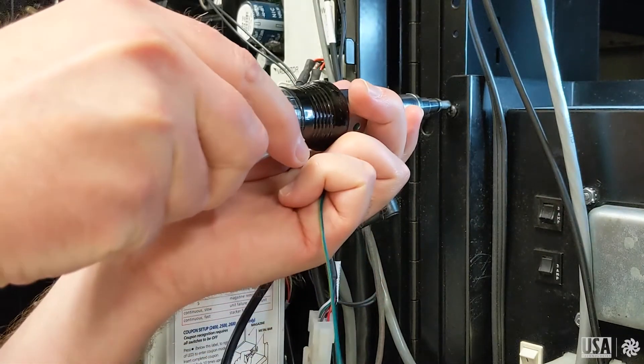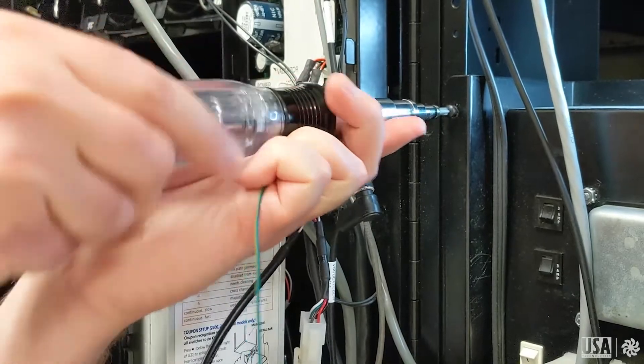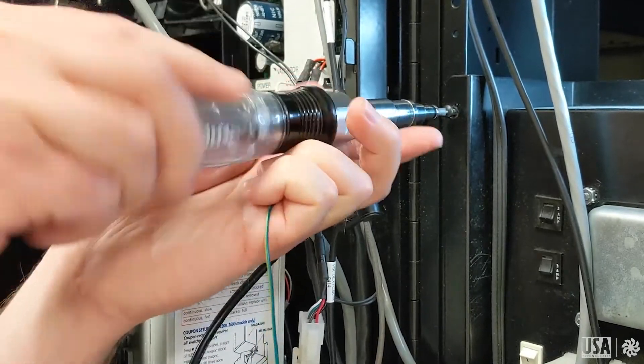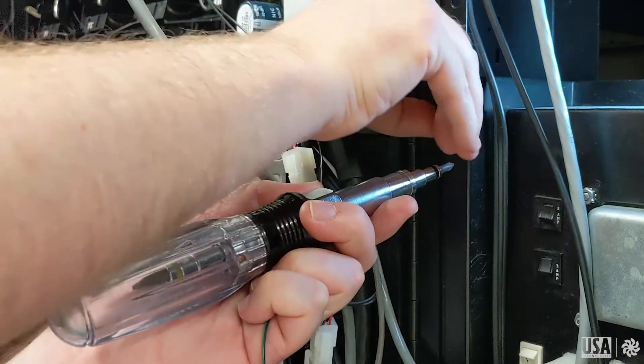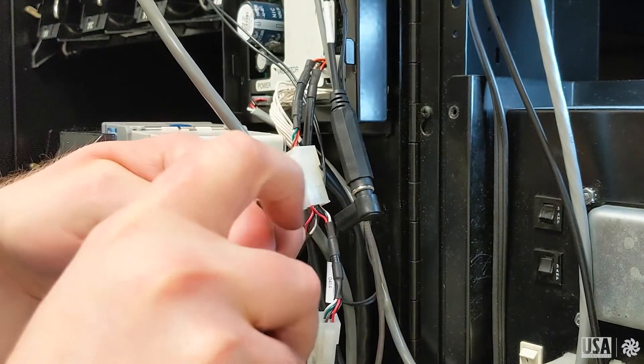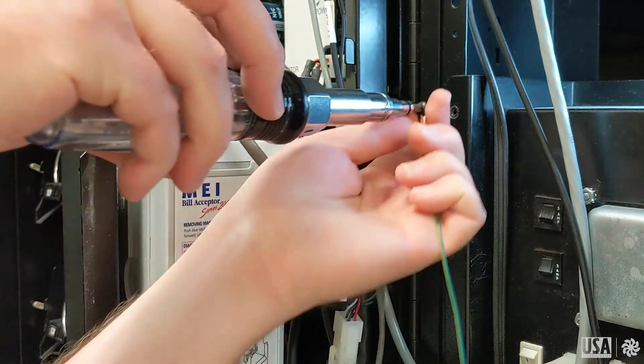Now we'll want to ground the unit using the ferrite loop and connecting it to a Phillips head screw close by to the MDB leads. Use the Phillips head screwdriver to unfasten the screw from the machine, being careful not to drop it after it's loose. Thread the screw through the ferrite loop and then reattach it firmly to the machine.